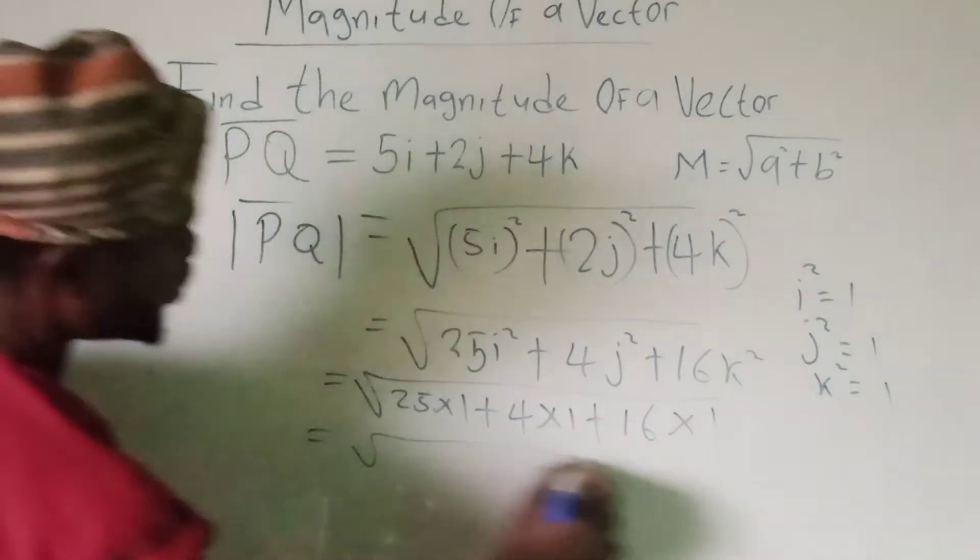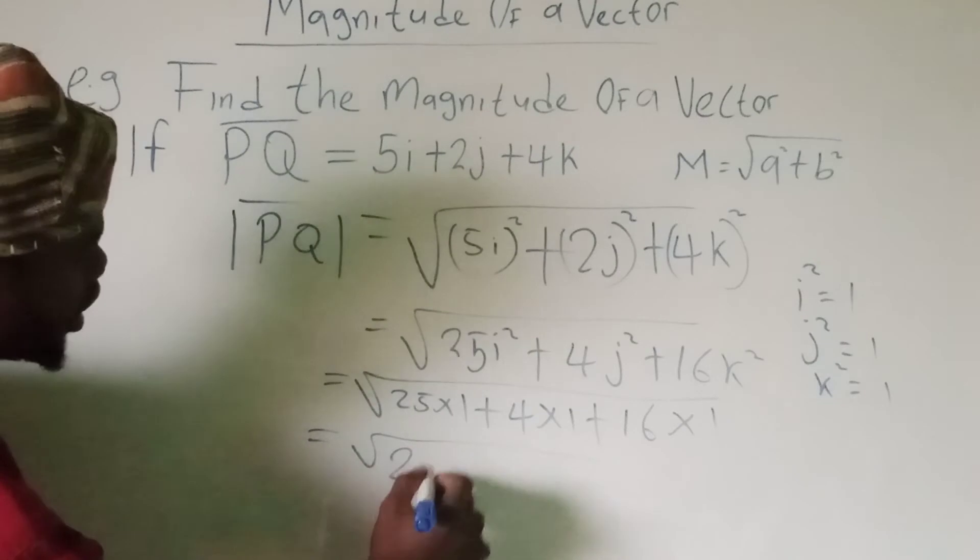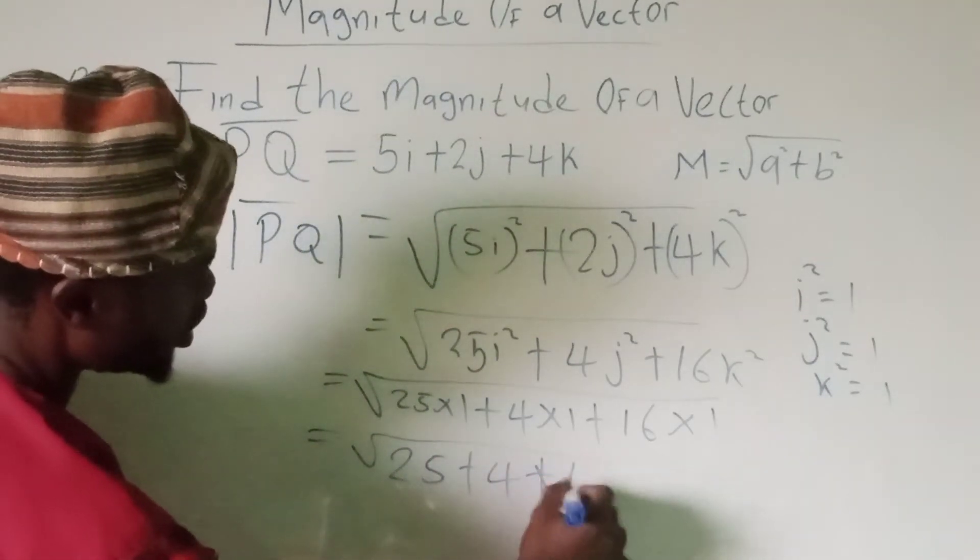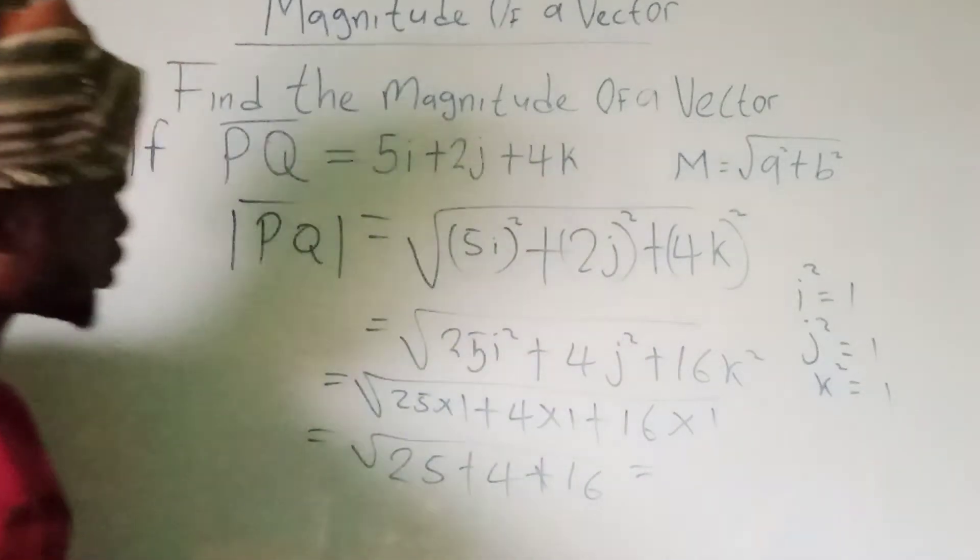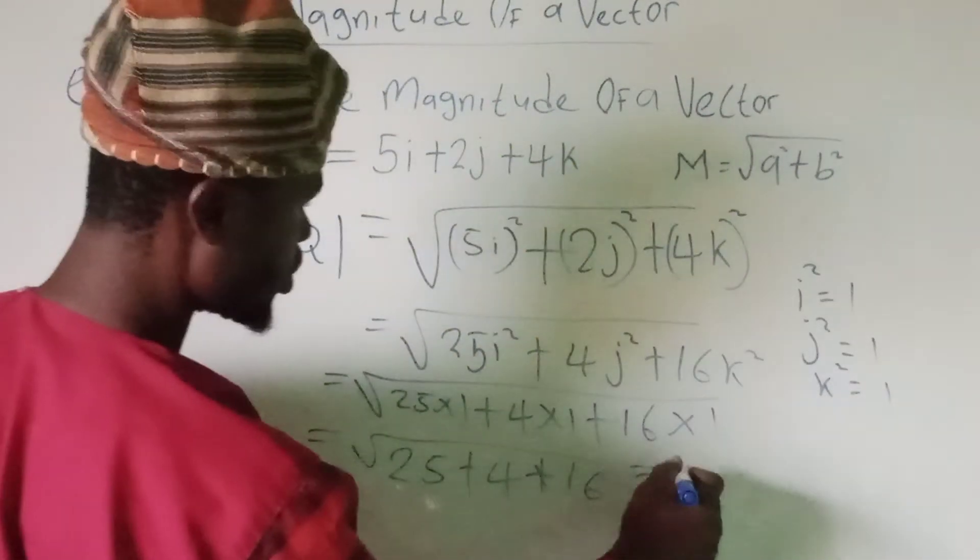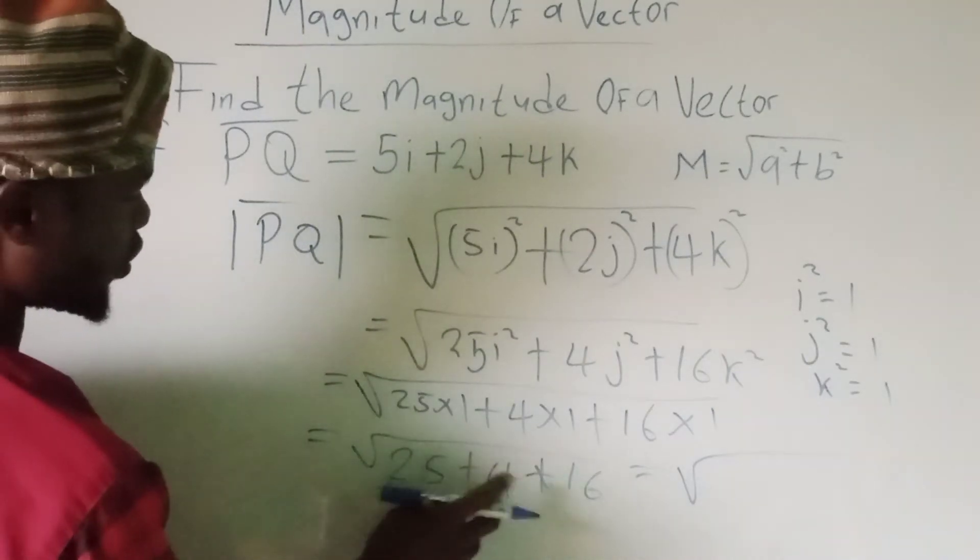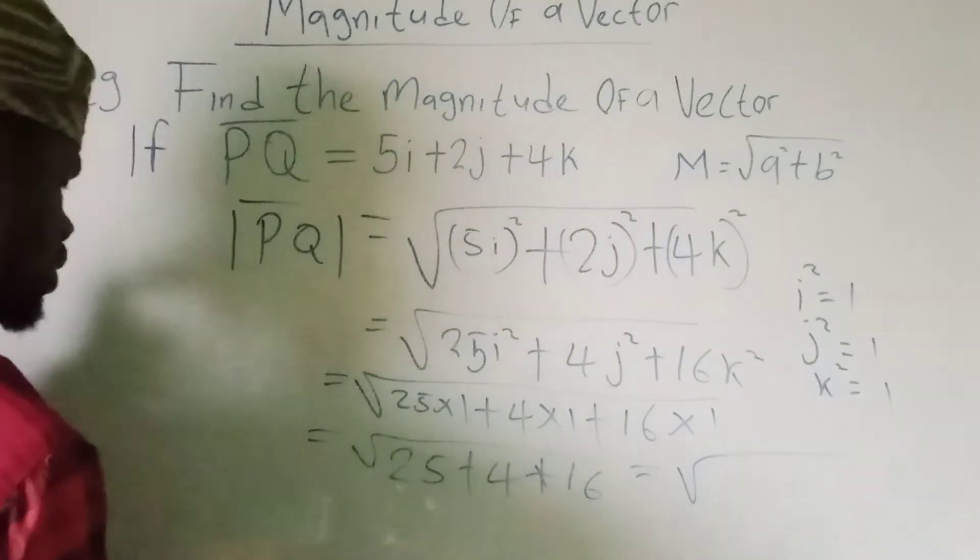We have square root of 25 plus 4 plus 16. Now we have square root of 45.